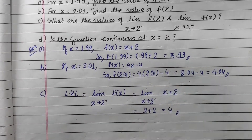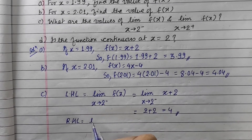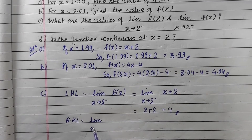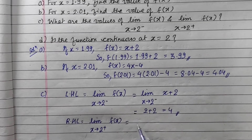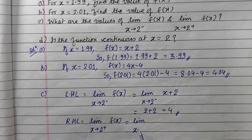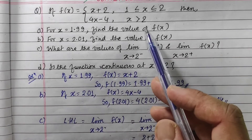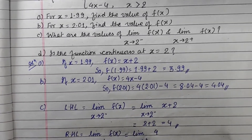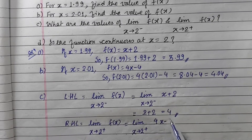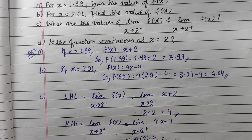Now for the right-hand limit: as x tends to 2 plus, we use f(x) = 4x minus 4. Substituting x = 2: 4 times 2 minus 4 = 8 minus 4 = 4. So the right-hand limit is also 4.